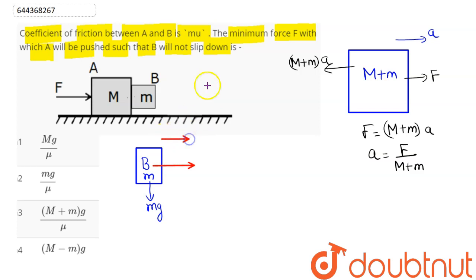So it will experience pseudo force to the left and friction upwards which balances the weight so that no slipping occurs. This is normal, this is acceleration, and this is friction. So pseudo force acting to the left of magnitude m into a.